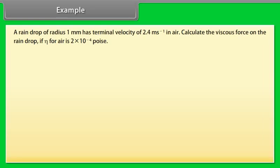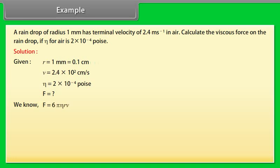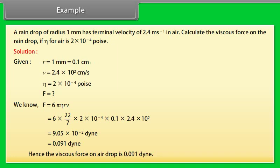Example. Let's take an example on Stoke's law. A raindrop of radius 1 millimeter has terminal velocity of 2.4 meters per second in air. Calculate the viscous force on the raindrop if eta for air is 2 times 10 to the power minus 4 poise. Let's see the solution. Given values are R equals 1 millimeter which can be written as 0.1 centimeter, V equals 2.4 times 10 squared centimeter per second, eta equals 2 times 10 to the power minus 4 poise. We know that F equals 6 pi eta RV. Putting their respective values in the above equation, on calculating we get F equals 9.05 times 10 to the power minus 2 dyne, which is equal to 0.091 dyne. Hence the viscous force on the raindrop is 0.091 dyne.